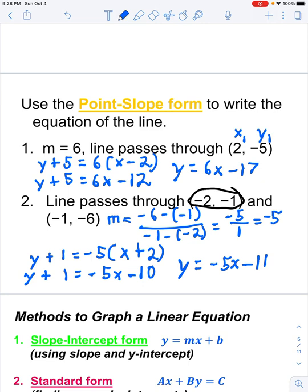So that's writing an equation of a line given either the slope and a point or two points, and you just plug in to the point-slope equation and simplify, making sure final answers are always in slope-intercept form.